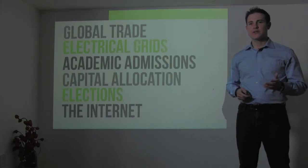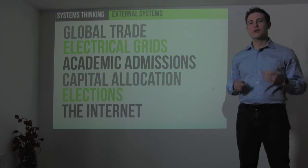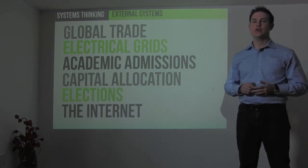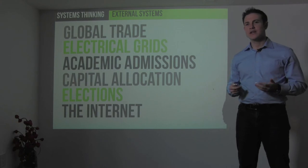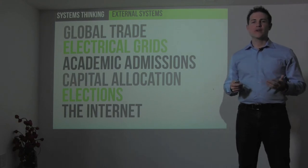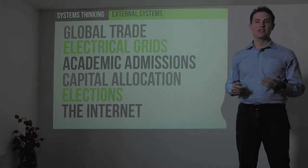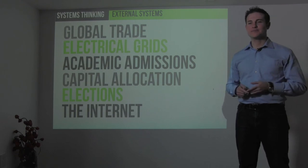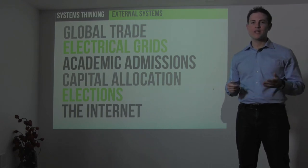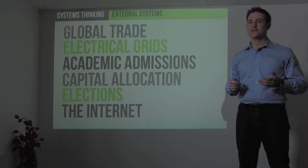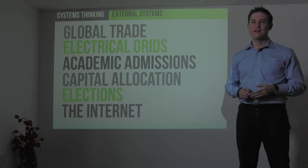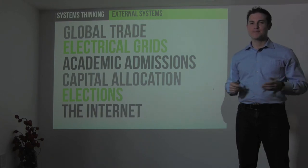External systems, on the other hand, are the systems at work among and between humans. Things like economics and global trade, electrical grids, academic admissions, capital allocation, elections, the internet. As you might imagine, there are thousands and thousands, maybe even hundreds of thousands, of different types of human systems.